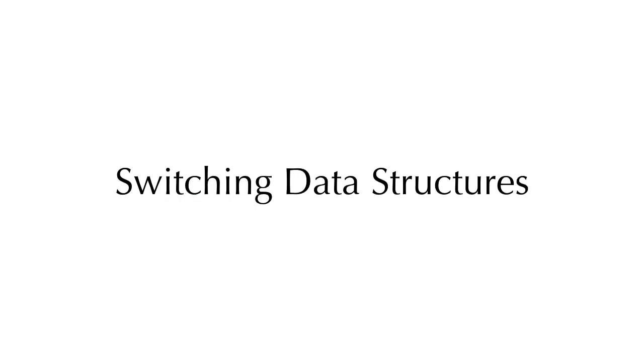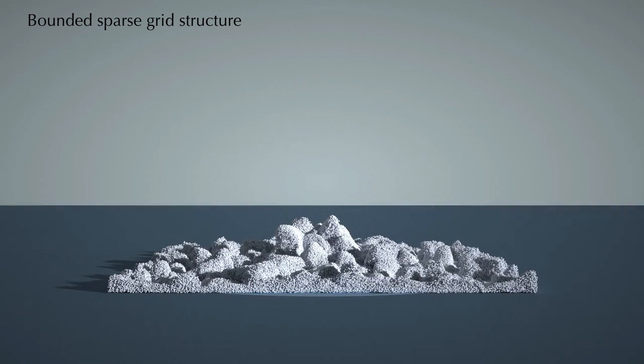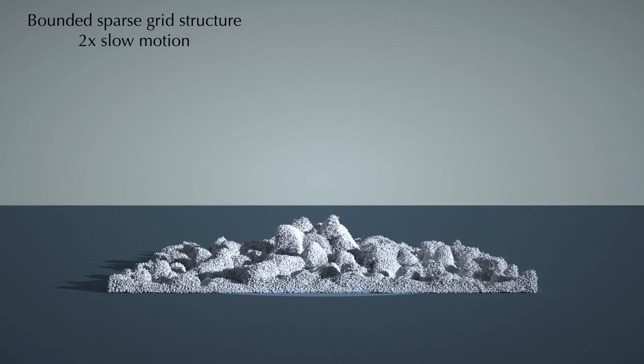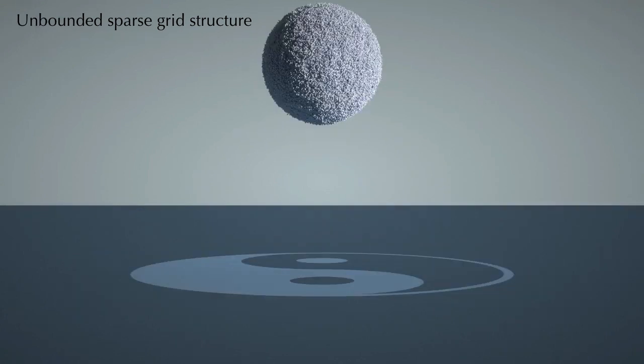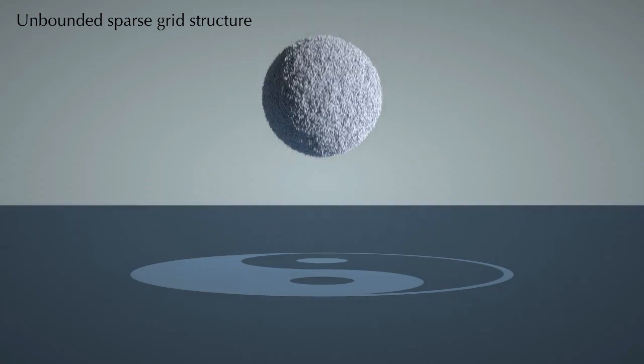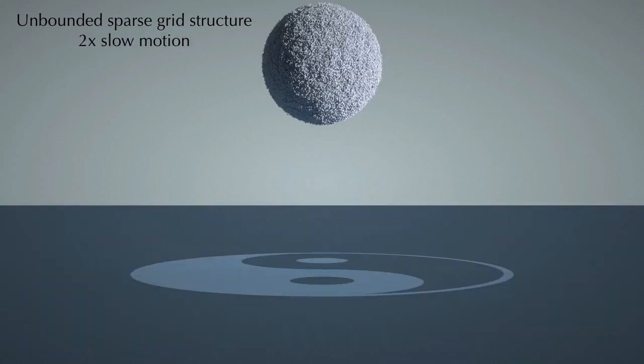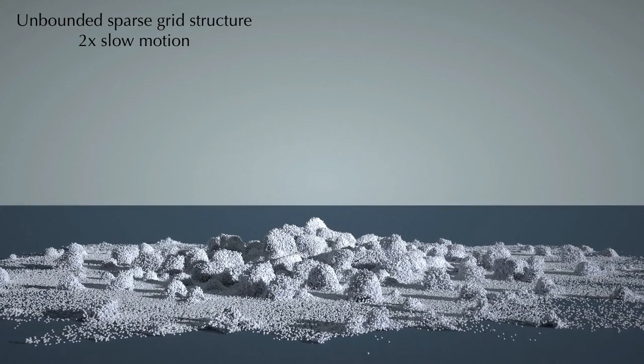Tai Chi allows programmers to easily customize and switch between different data structures. Here is a snowball simulation in a bounded 3D grid. You may notice the bounded domain leads to an undesirable behavior when the snow particles hit the boundary. We can easily modify the data structure with one line of code and change the boundary condition to make the simulation unbounded. This is thanks to our computation data structure decoupling and the expressiveness of our data structure language.